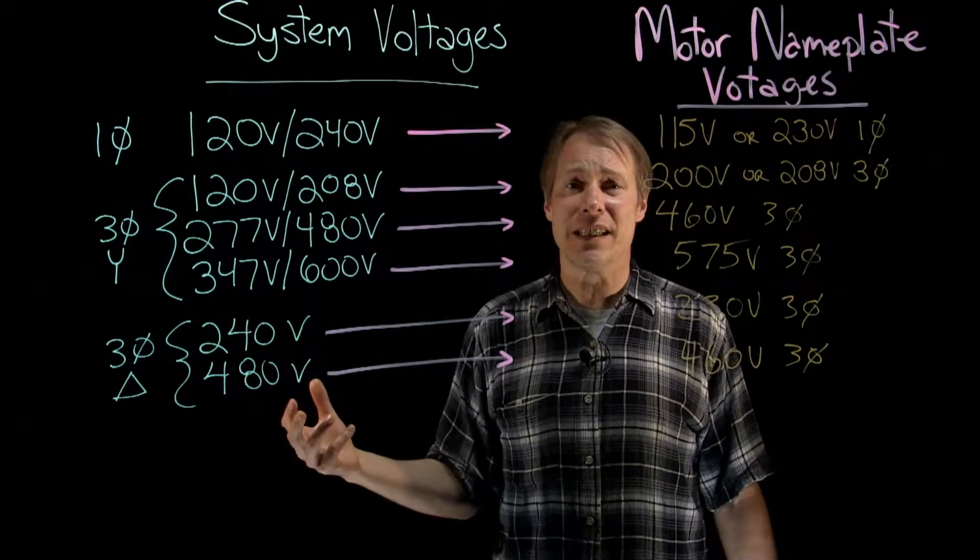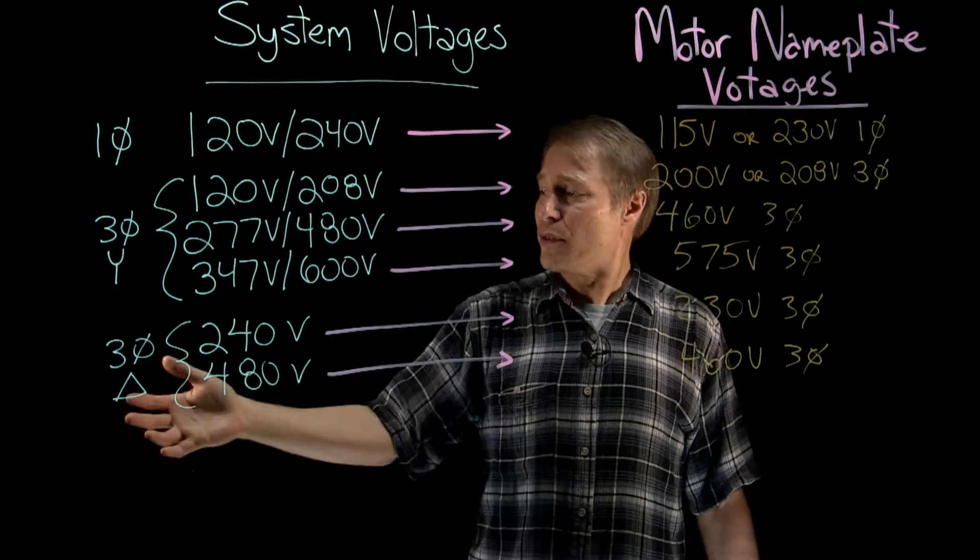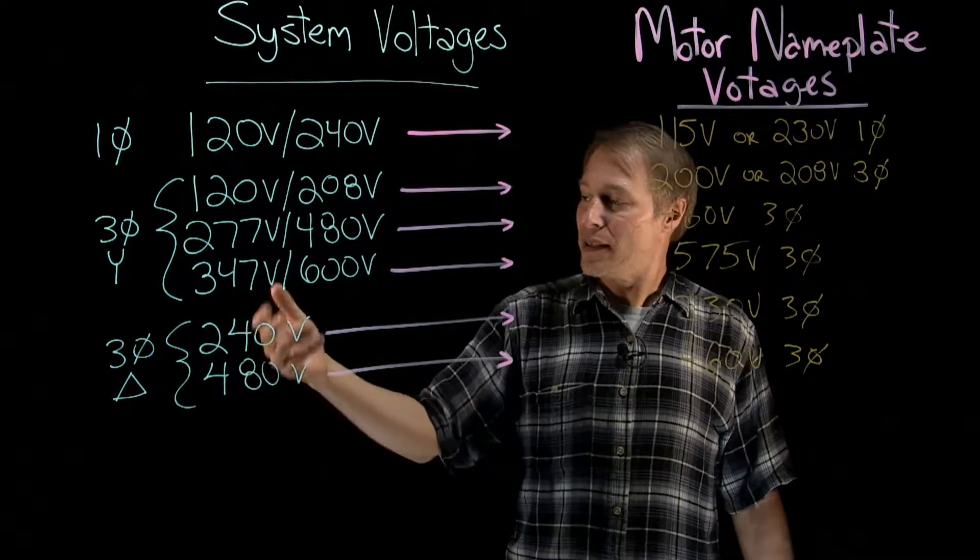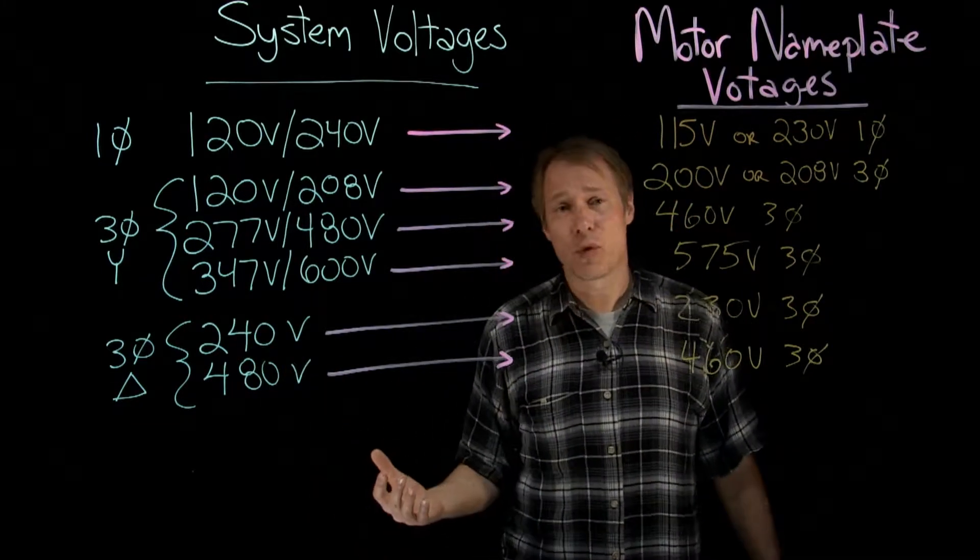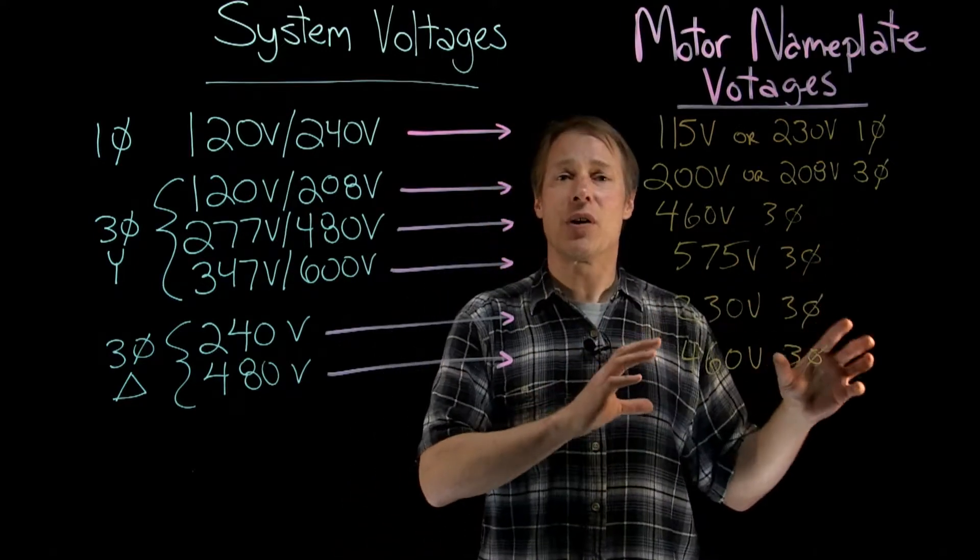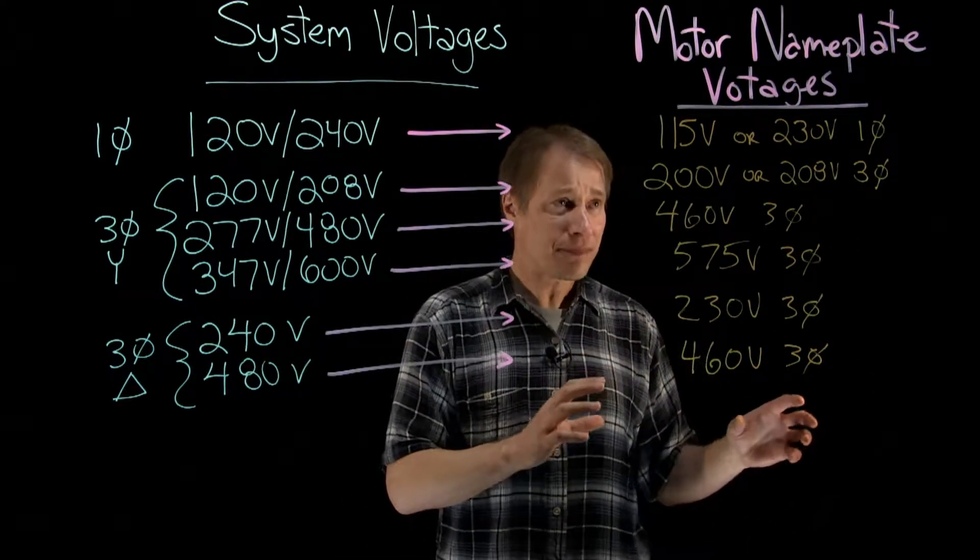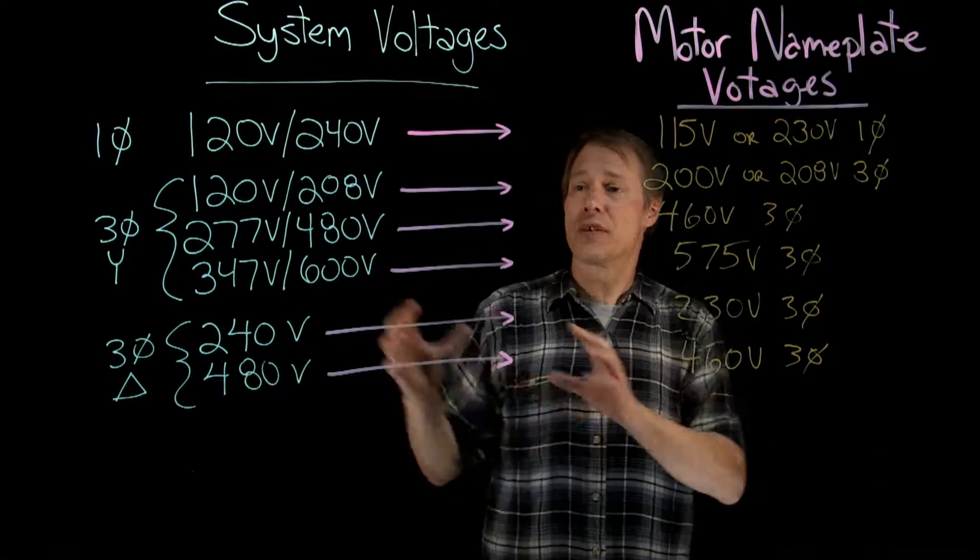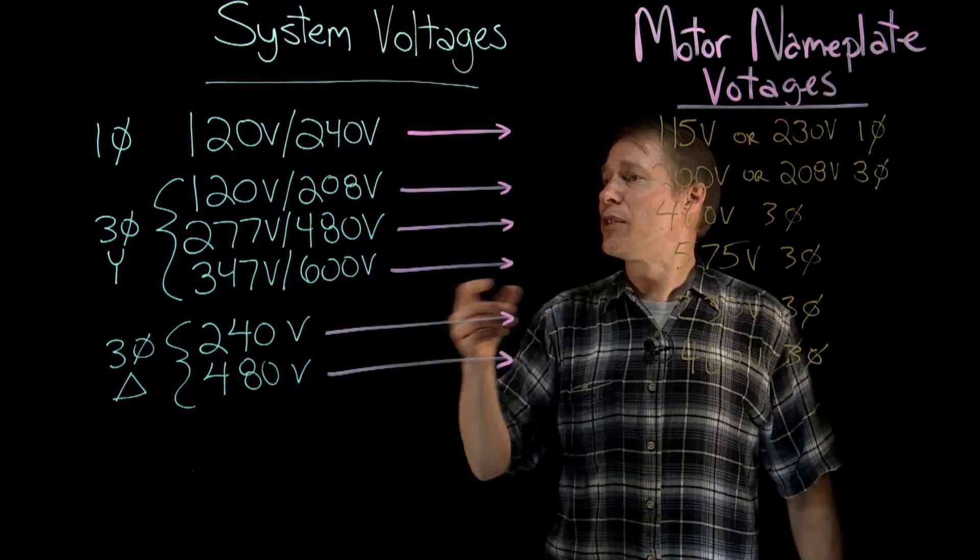And then lastly, typically industrial applications. We have the three phase delta system, and you can see we have the 240V option or the 480V option. So over here, this is what is stamped on the nameplate of a motor, and these are our options for these systems. So let's just briefly go through that.